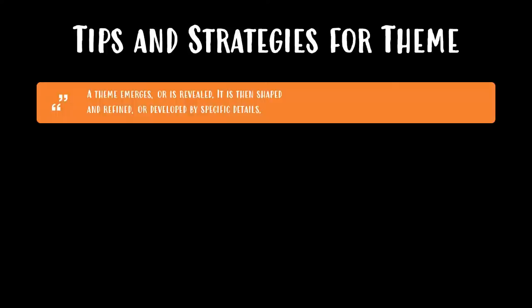Just a couple of tips and strategies to help you figure out the theme. First of all, you need to remember that a theme emerges or is revealed and then it's shaped, refined, and developed by specific details. As you get to be a stronger reader and a stronger close reader, it will be easier for you to pick up on the theme early on and then track it as the story goes on. It's okay to have to read the story all the way through and then kind of work backwards.